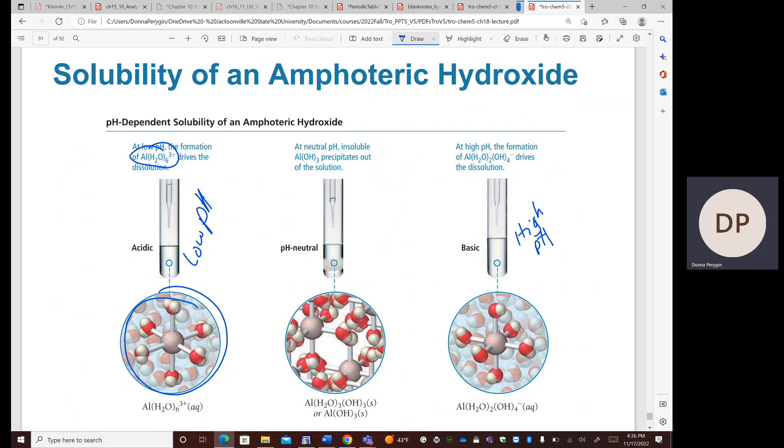We also see that at high pH in basic solution, aluminum also forms a complex. It's a different complex. It forms a hydroxide complex with water as well, and that will also increase the solubility of aluminum in basic solution. But at a pH-neutral solution, the aluminum precipitates out in the form of this hydroxide that is not soluble, and therefore it will precipitate out at neutral pH.